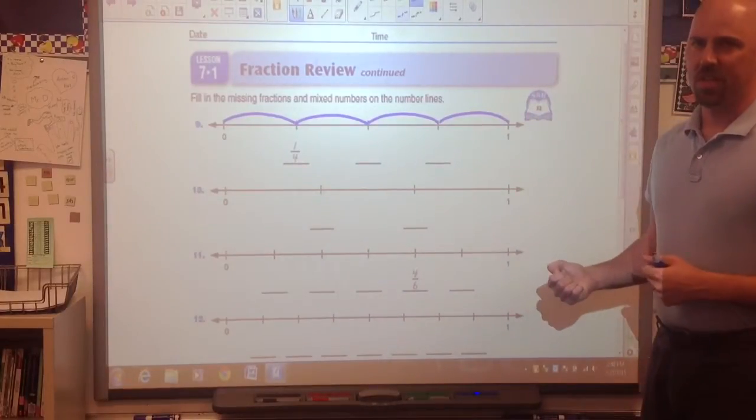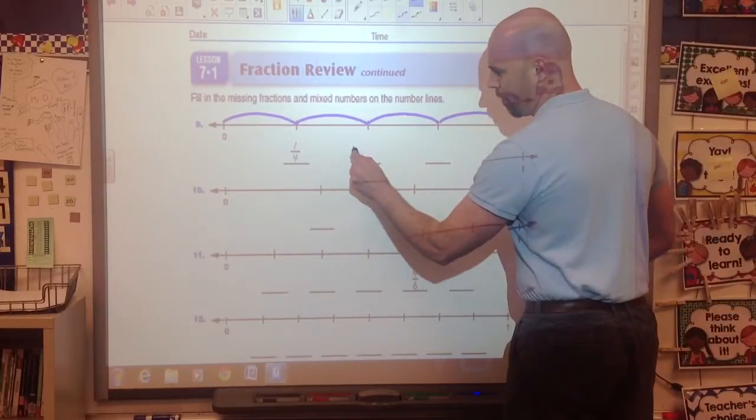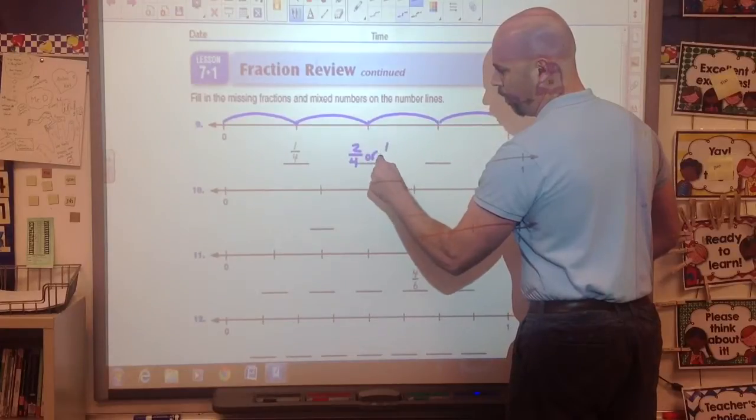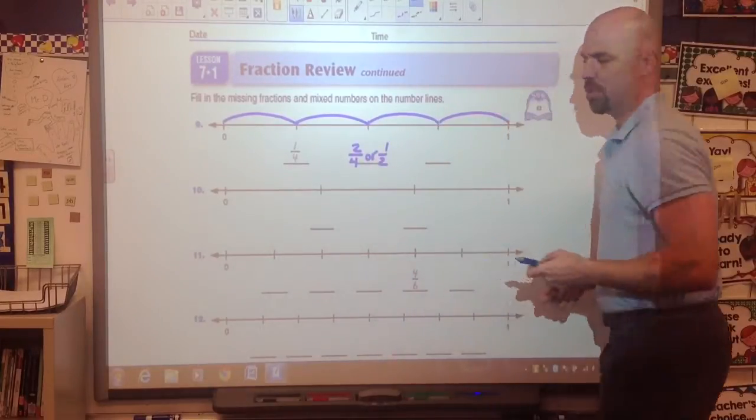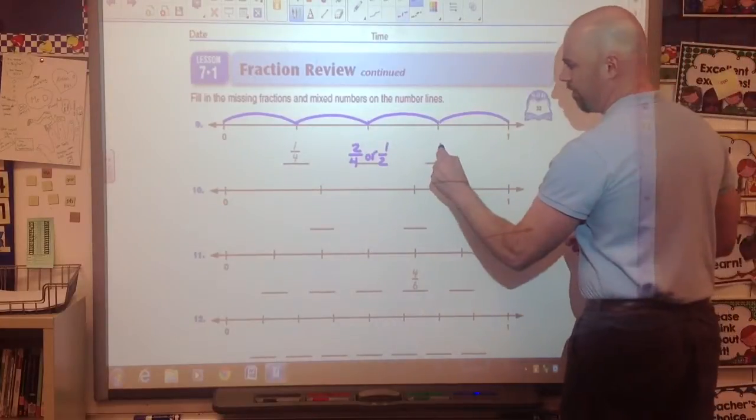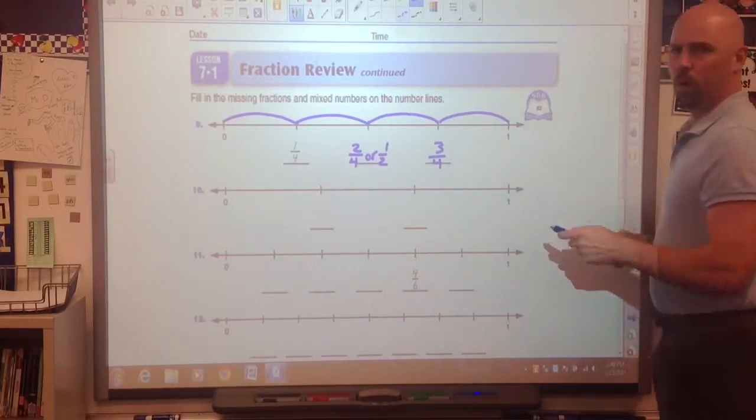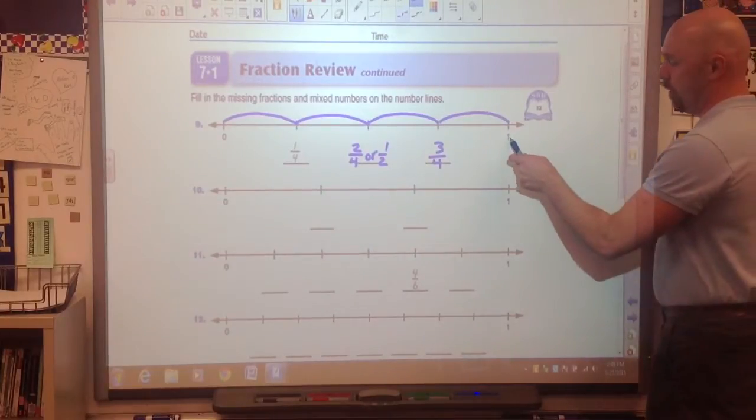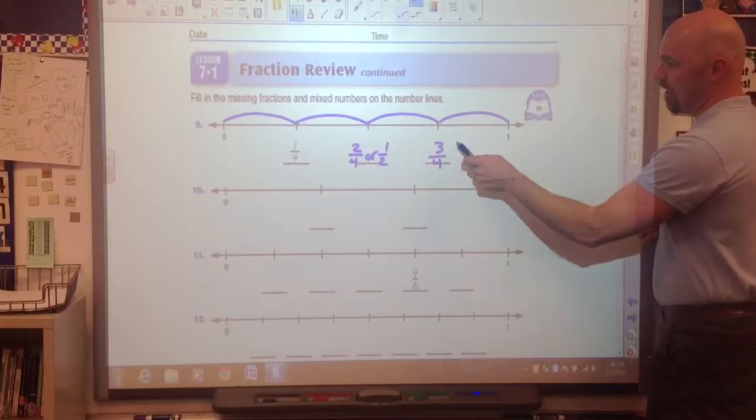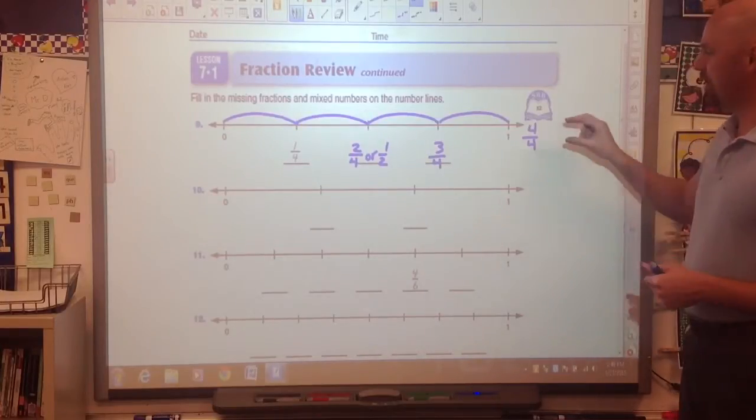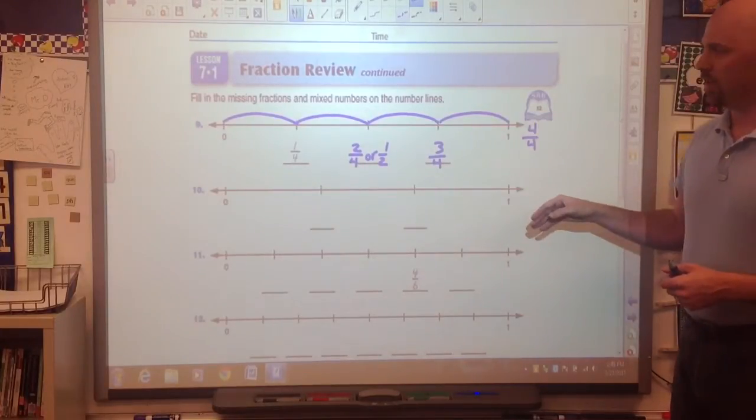This thing is cut into fourths. So we have one-fourth. We have two-fourths, or one-half. And we start dropping those in just to make sure that we start talking about equivalent fractions. Three-fourths. And one whole. And we also write down next to one whole four-fourths. We want to get them in the habit of understanding that four-fourths and one whole are the same.